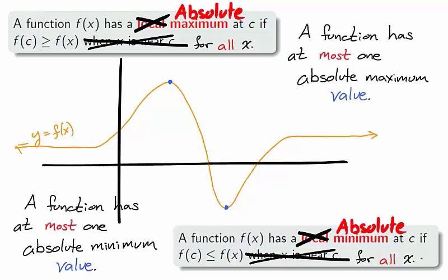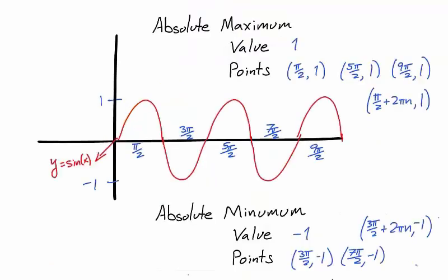What you would expect with the name absolute, a function has at most one absolute maximum value and at most one absolute minimum value. However, multiple points may attain these values. Take, for instance, the sine curve. The amplitude is 1, so the absolute maximum value is 1.